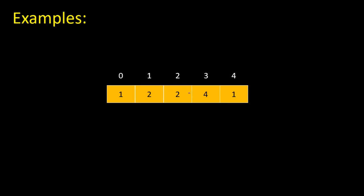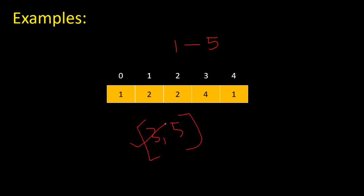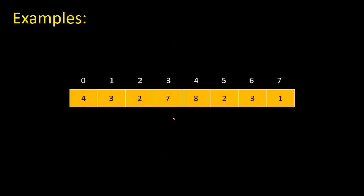If you're given this particular array, the length is five, so the maximum integer we can have is five and the minimum is one. Here we see we have one, two, four — we are missing three and five in the range of one to five. In this case we have to return three and five.